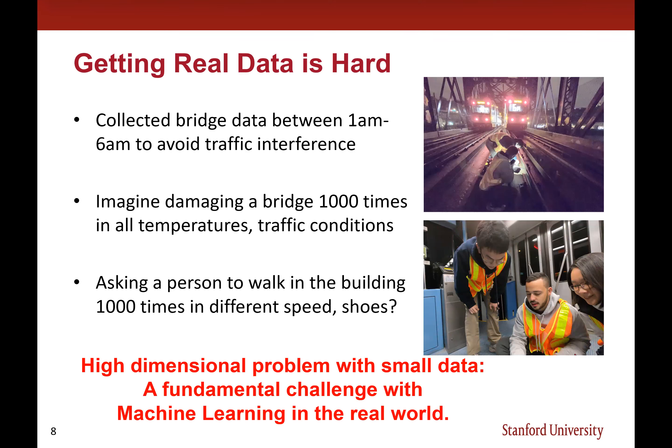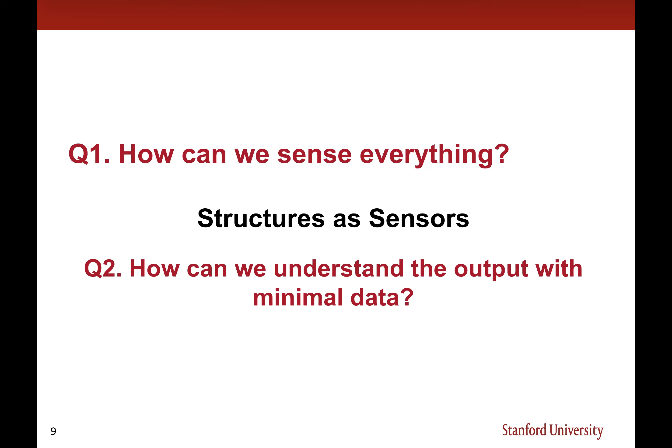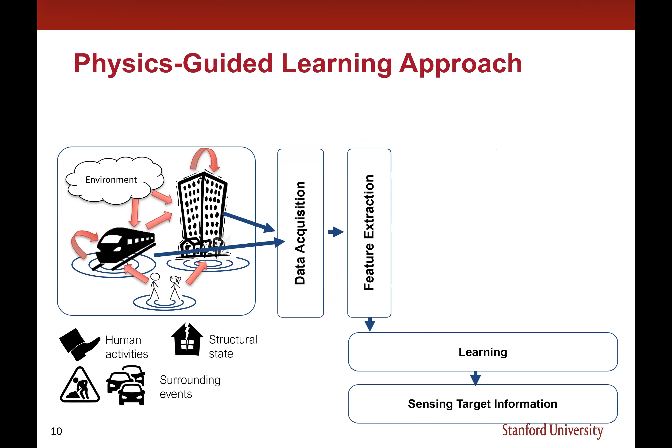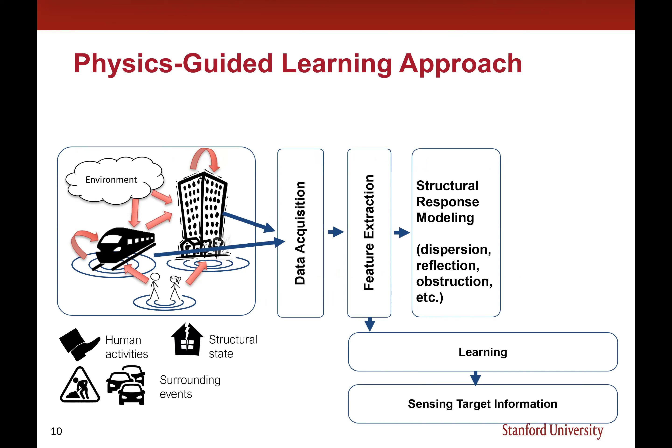Consider trying to collect data from this bridge under different damage conditions, temperatures, and traffic conditions to reach 1,000 samples — that would take a very long time. Or imagine asking a person to walk around a building 1,000 times wearing different shoes and walking at different speeds. This high-dimensional problem with small data is a fundamental challenge in real-world machine learning. So we've been working on the second problem: how can we understand the output of structures-as-sensors with minimal data requirements?